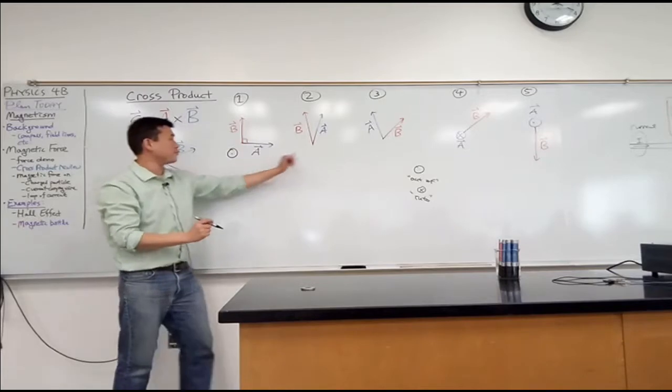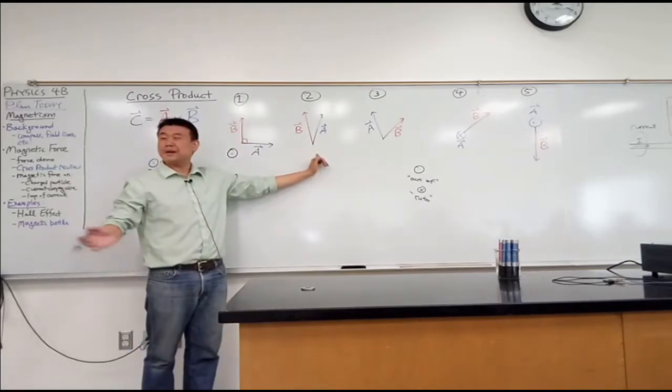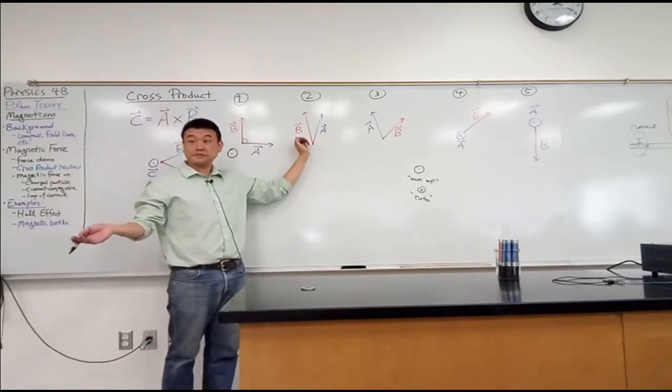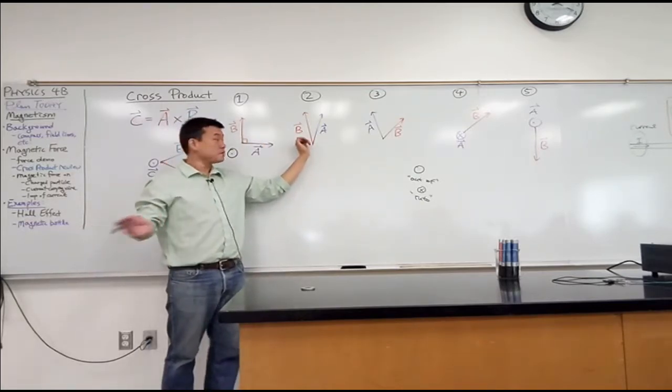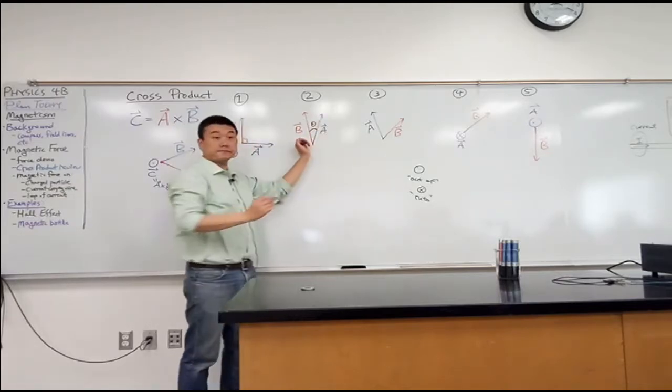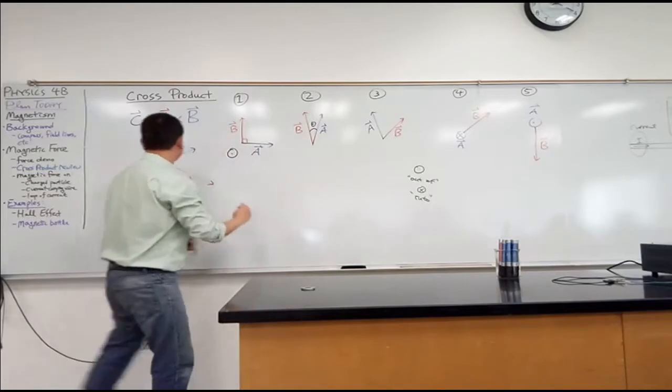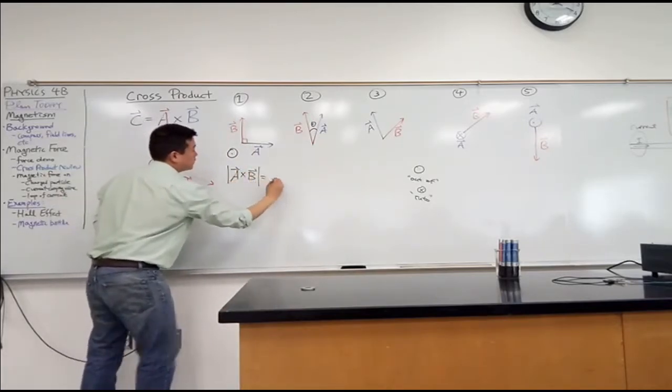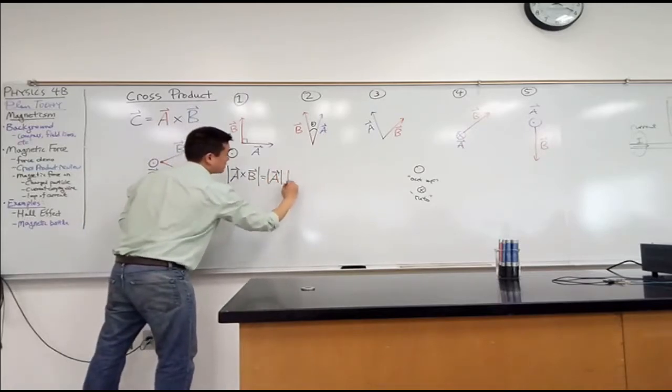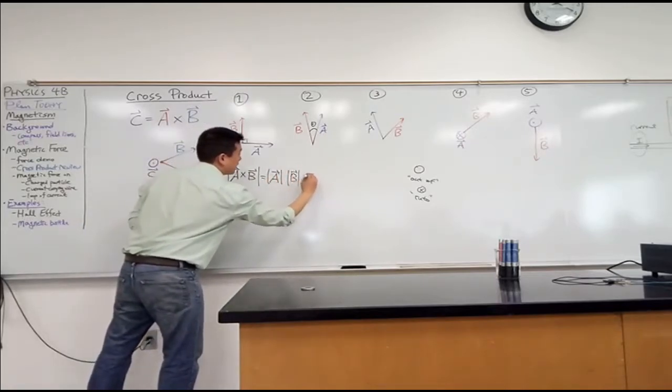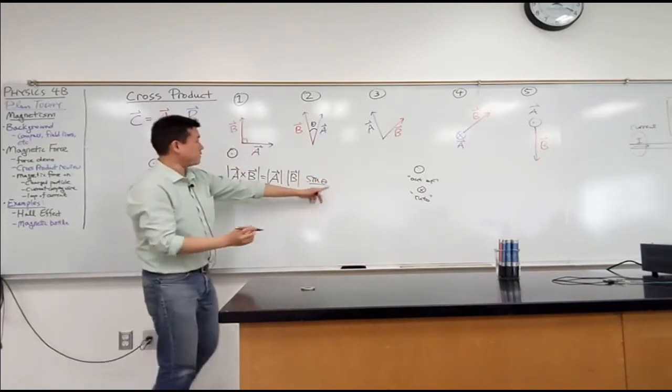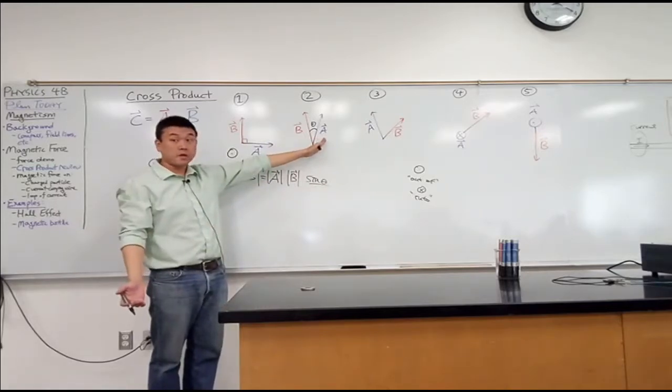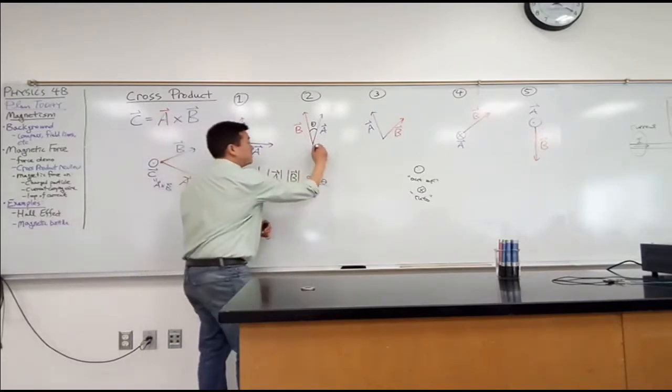What about two? Out, did anything change from one to two in terms of direction? So what changed? The angle here changes. What does that affect? Magnitude. Because if you remember A cross B, the magnitude of it was the magnitude of A times magnitude of B times sine theta. So if this angle theta decreases from 90 degrees, that'll make the cross product smaller in magnitude. But in terms of direction, it's still the same direction. It's still out of the board.